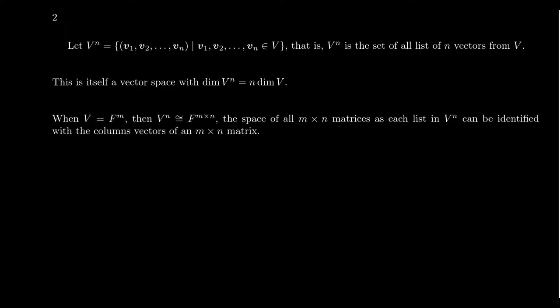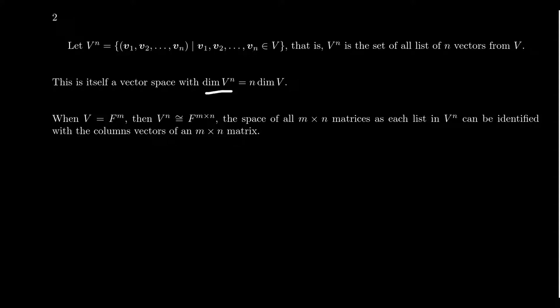What about determinants? Let's form a new vector space. We're going to call it V^N, where N is any natural number. We define V^N to be the set of all lists of size N: V1, V2, up to VN, where these are vectors that live inside the vector space V. This itself makes a vector space, and the dimension of V^N is just N times the dimension of V. Basically we're taking N copies of the vector space that already exist.